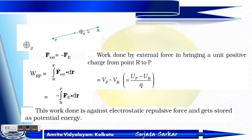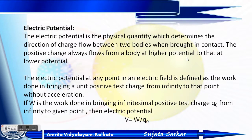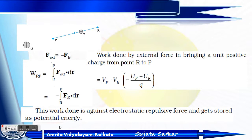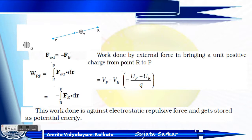Here q is a point charge. When we move from higher potential to lower potential, that is from point R to point P, the work done by external force in bringing a positive charge from R to P — since this is a repulsive force, the total force is minus F_e. The work done by external force is the integration of F_external dr, which is against the electrostatic repulsive force, and it gets stored as potential energy.